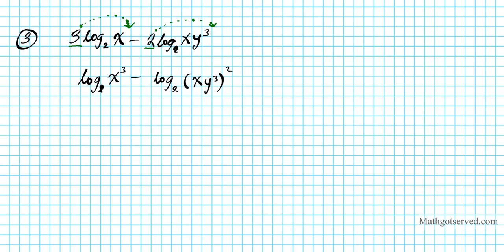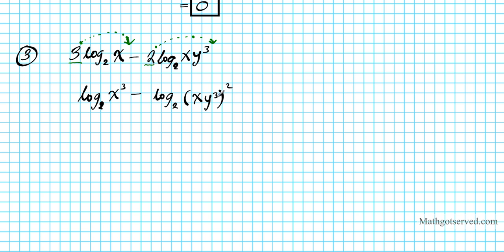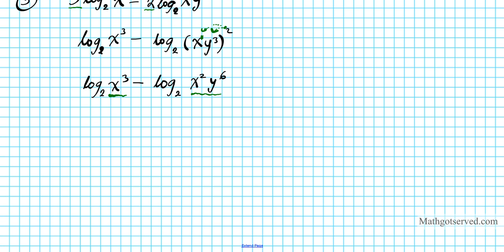So we have log base 2 of x to the third, minus log base 2 of (xy to the third) squared. Notice the entire argument gets raised to this power. Shifting attention to the second term, we have a product raised to a power, so we distribute the exponent: log base 2 of x to the third, minus log base 2 of x squared times y to the sixth. Now with uniform logs we can condense: since we have a difference, it becomes a quotient — the first log is the numerator and the second is the denominator.